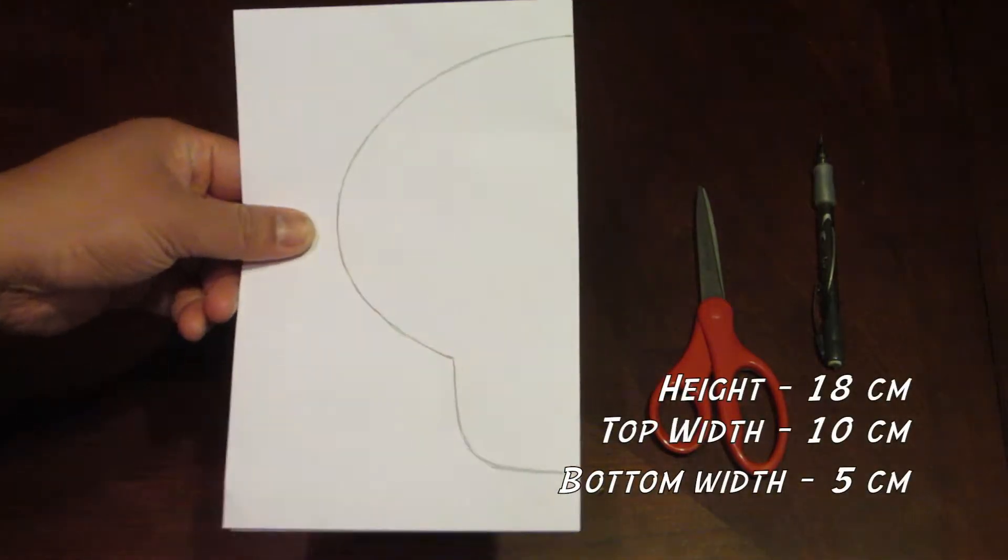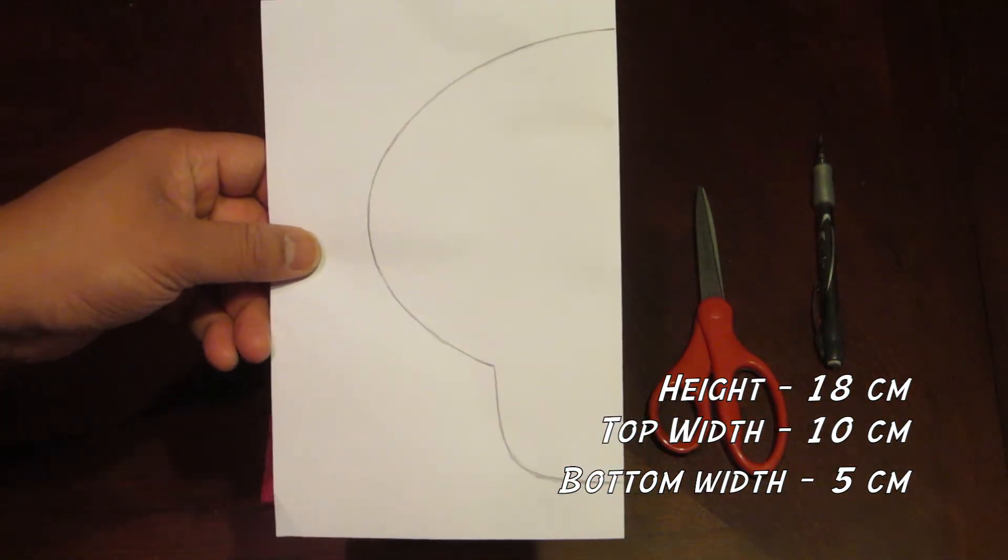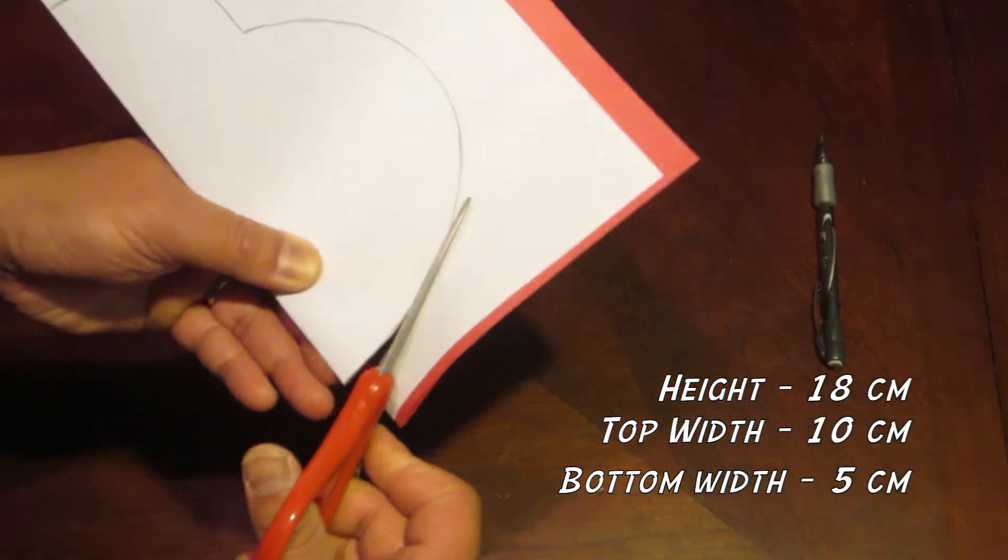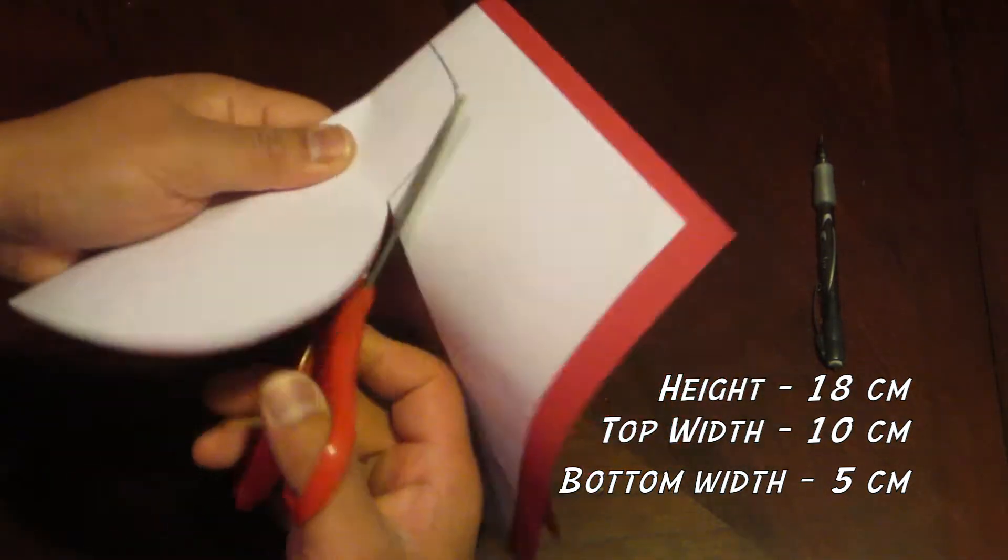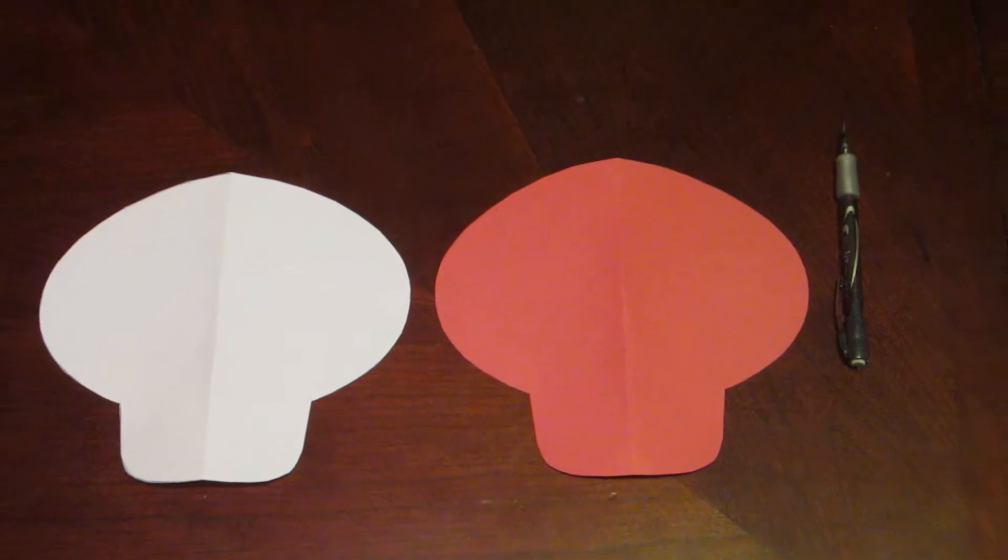Next draw half of a mushroom outline like this. Next cut out the outline. Once done you should have two mushrooms.